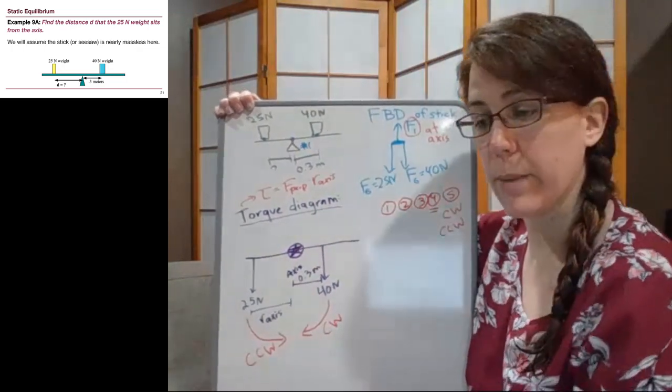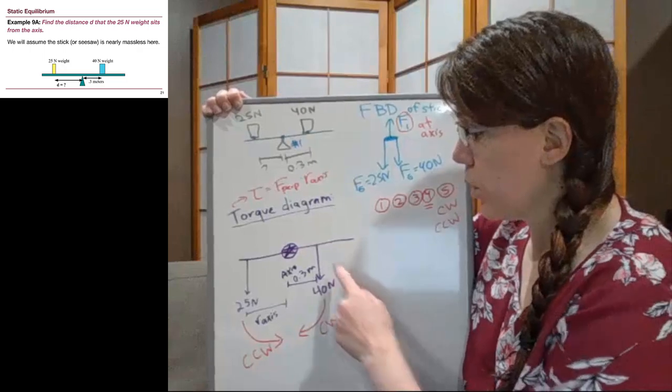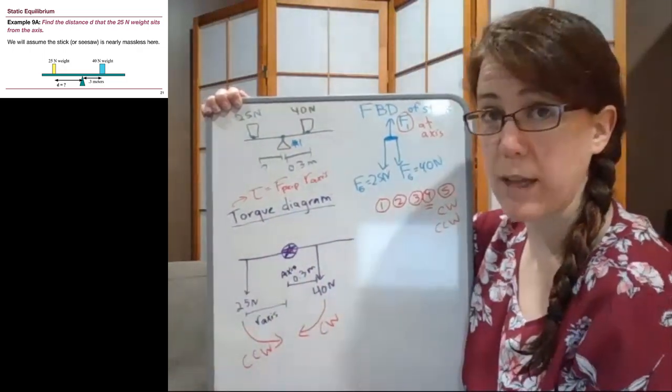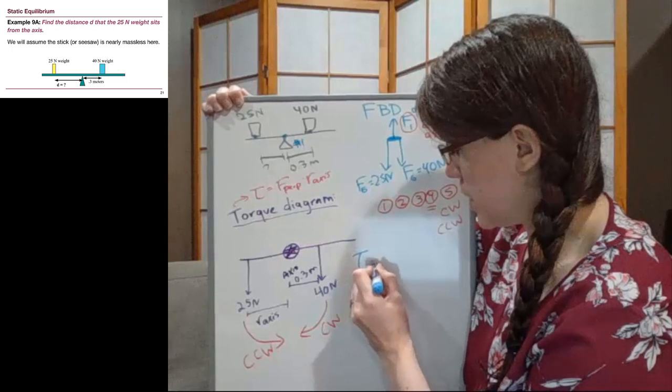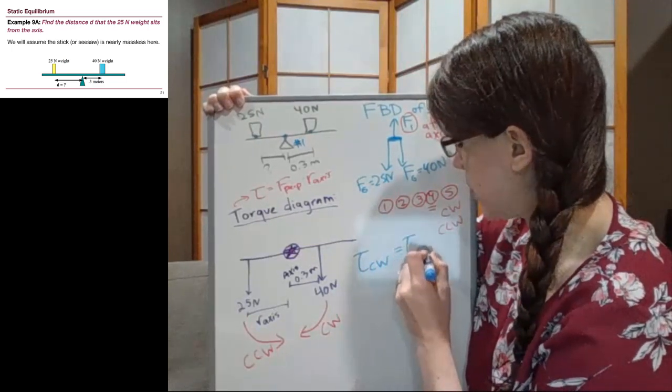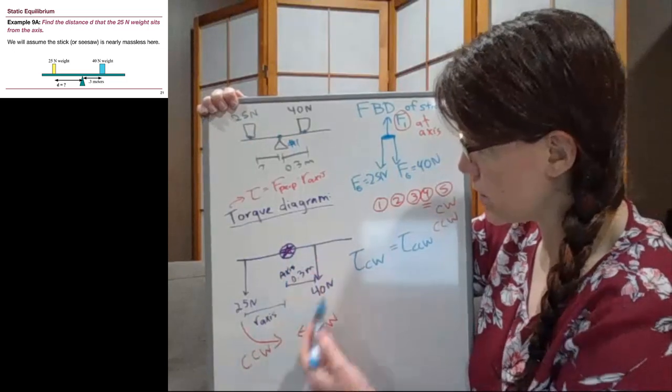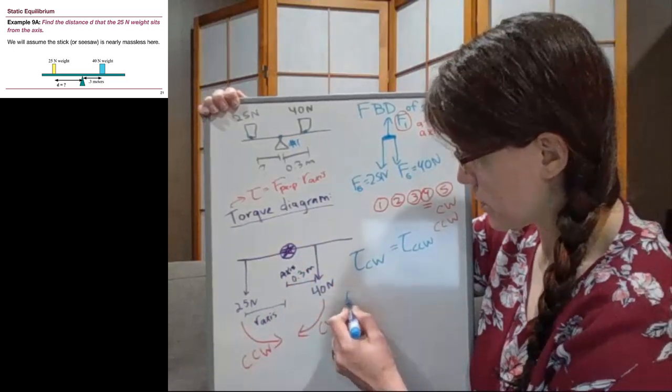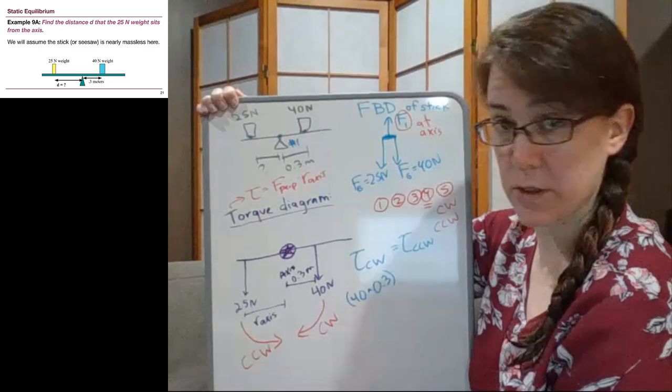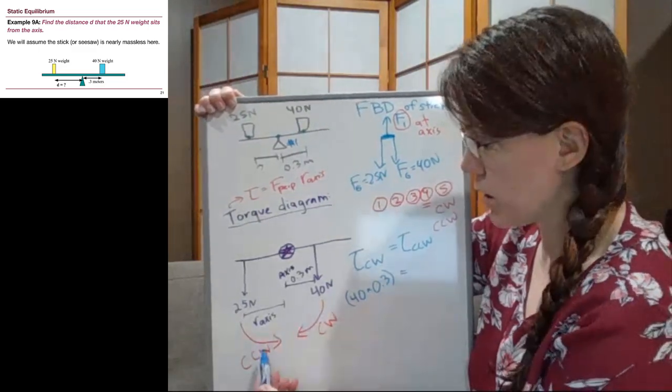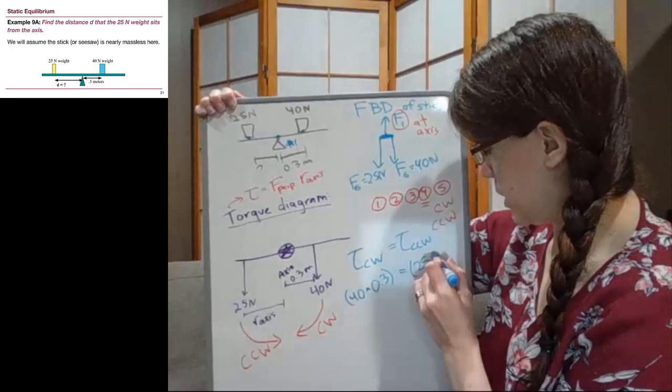So those steps of drawing the torque diagram make it so that when we actually write down our tools here, we've got everything we need to plug the correct numbers into the correct spots right away. The tool that we're using down here is the condition for equilibrium: torques clockwise equal torques counterclockwise. So we look, and in this initial example, we only have one torque clockwise. Torque is force times distance. We have 40 newtons of force times 0.3 meters of distance. And when we look at our counterclockwise torques, there is only one here. It is 25 newtons of force times our unknown R axis.